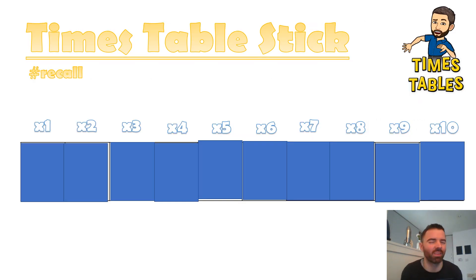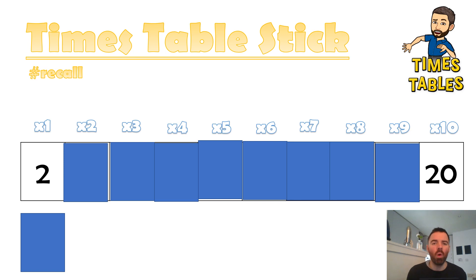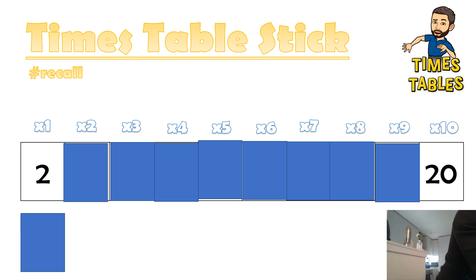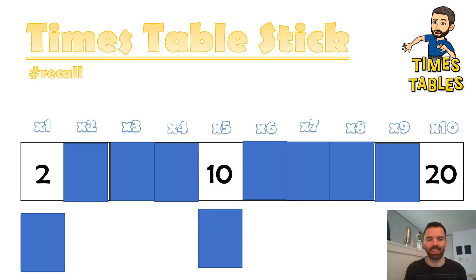Are we ready to do some real times tabling? This is what I call a times table stick — it's a good way to remember your times table. We're looking at the two times table. What's the times table? It's two. What would two times ten be? I'm multiplying it by ten. Two times ten would be twenty. What is half of twenty? I've got twenty — cut it in half. Half of twenty is ten. Can you say: two, ten, twenty? Your turn: two, ten, twenty.